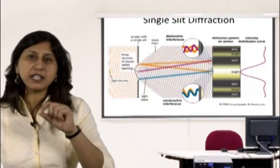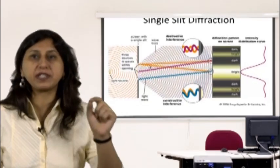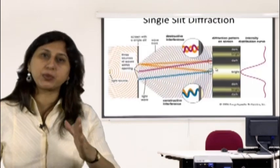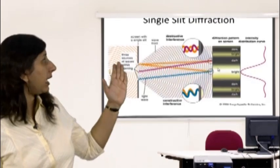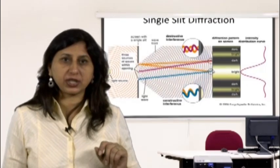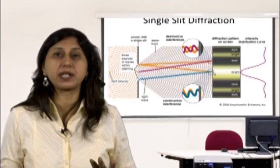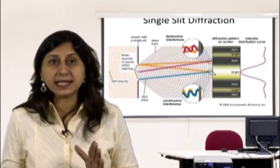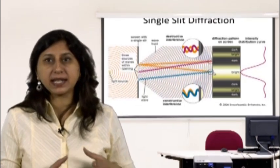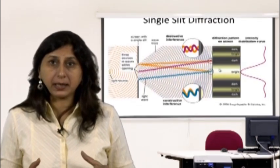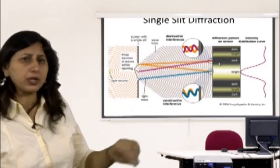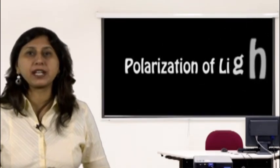For single slit diffraction, d is defined as the width of the slit and θ as the angle between the middle of the slit and point P. Single slit diffraction is much less noticeable than double slit interference — the maximum at n = 0 is very bright, but all other maxima are barely noticeable.